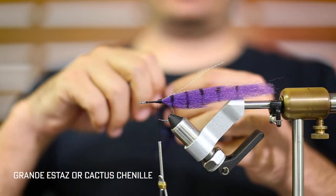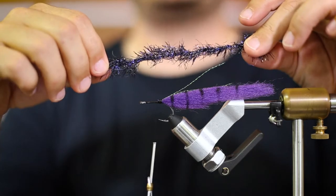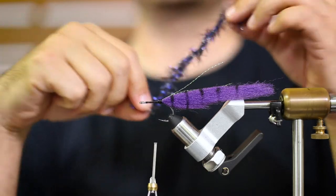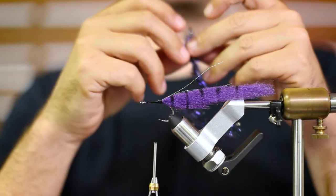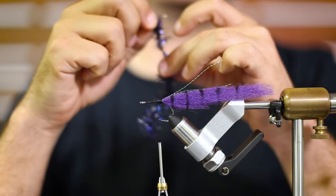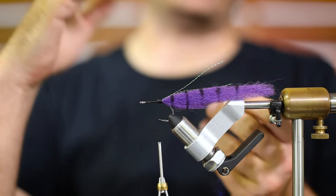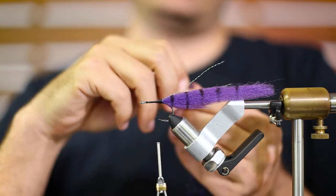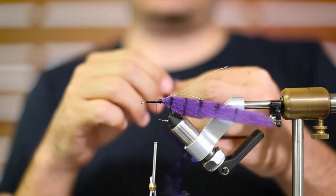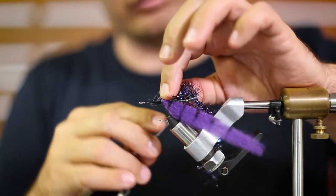This is some extra long or grande estaz. You can also use longer cactus chenille. I'm just going to make this as a collar material. Basically, I found this stuff to be some of the lightest. Just holds no water. It keeps the gurgler floating up high no matter what. And throws really light. You can really just keep throwing it without having to wear out your arm or put too much effort in.